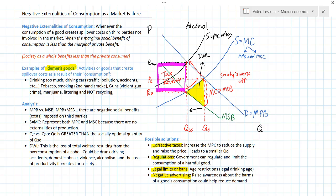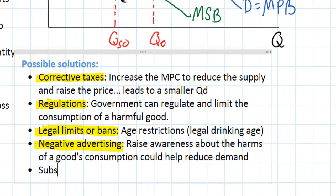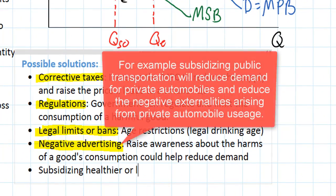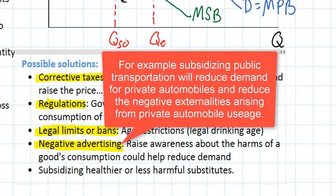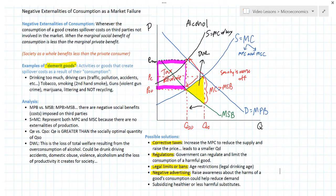Corrective taxes, regulations, legal limits or bans, negative advertising—these are all ways to reduce demand or increase the cost, the marginal cost, of the goods that create negative externalities of consumption. One other method I could add here is subsidizing healthier or less harmful substitutes. We know that a substitute good, if the price of substitutes were to fall, then demand for these harmful goods would decrease. So we can add that to our list of ways to reduce the consumption of demerit goods.